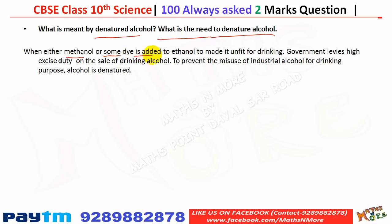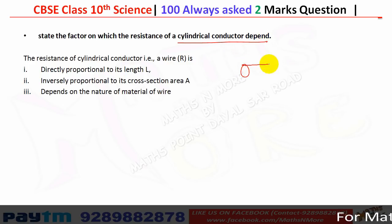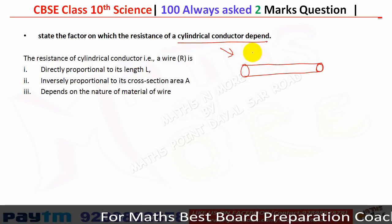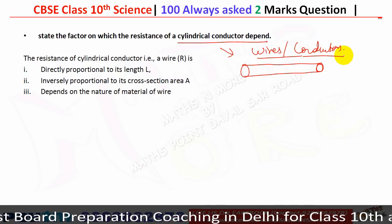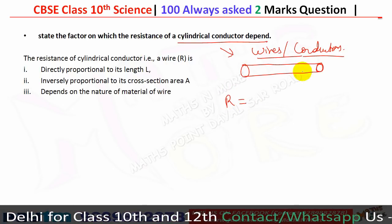Denatured alcohol is ethanol to which methanol or some dye has been added to make it unfit for drinking. The need for denaturing: the government levies high excise duty on drinking alcohol, so to prevent misuse of industrial alcohol for drinking, alcohol is denatured. The resistance of a cylindrical conductor depends on the nature or resistivity of the material, its length, and its area of cross-section.